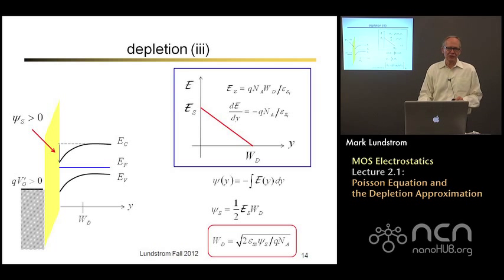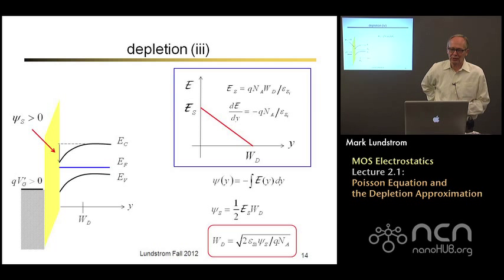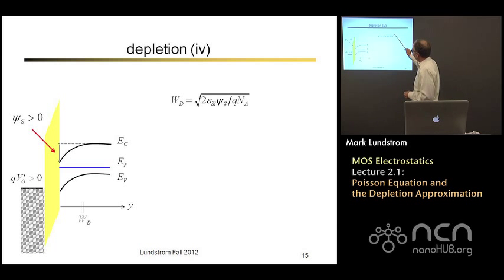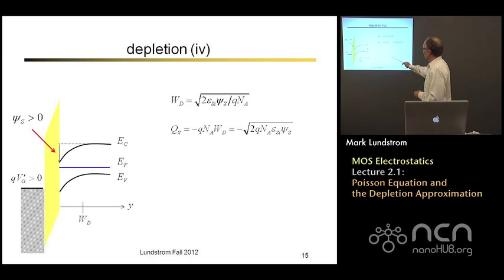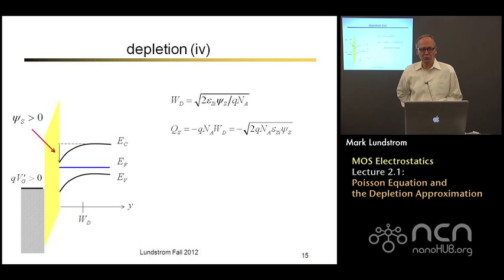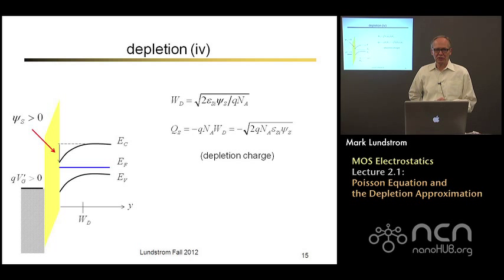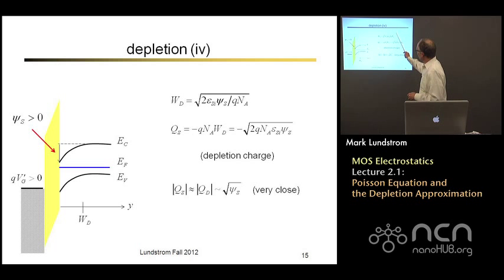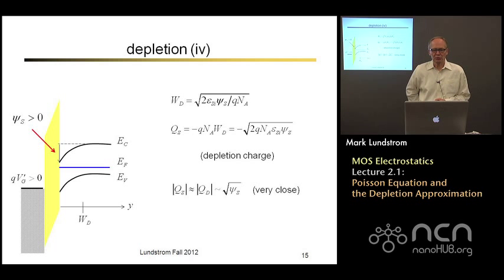When I put a red box around a result, it means it's an important one we're going to use frequently. The bottom line is we have a nice simple relation between the width of the depletion region and the potential at the semiconductor surface. We also know the charge in coulombs per square centimeter — it's just the charge in coulombs per cubic centimeter times the width of that region. So we have a nice expression for the depletion charge; it's also proportional to the square root of the band bending. Under these conditions, positive surface potential but not too positive, the charge in the semiconductor is the depletion charge, and it goes as the square root of the surface potential.